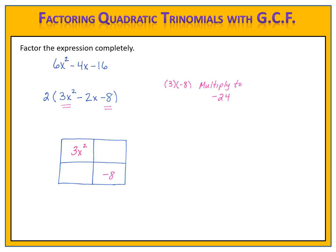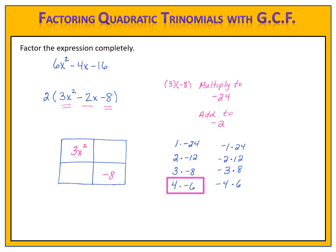We need numbers that multiply to negative 24. We look at the number in the middle, negative 2 — we need numbers that add to negative 2. We begin listing numbers that multiply to negative 24: 1 times negative 24, negative 1 times positive 24, 2 times negative 12, negative 2 times positive 12, 3 times negative 8, negative 3 times positive 8, 4 times negative 6, negative 4 times positive 6. Which pair adds to negative 2? 4 and negative 6. We put those numbers, 4x and negative 6x, in the remaining two boxes in the grid.